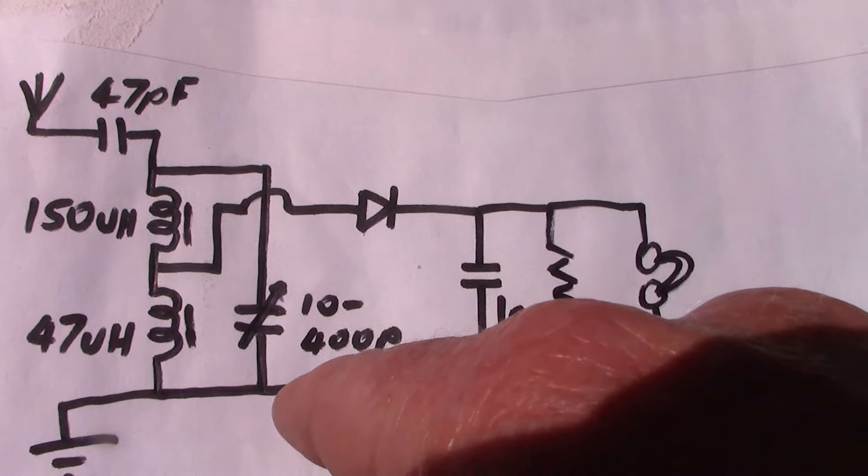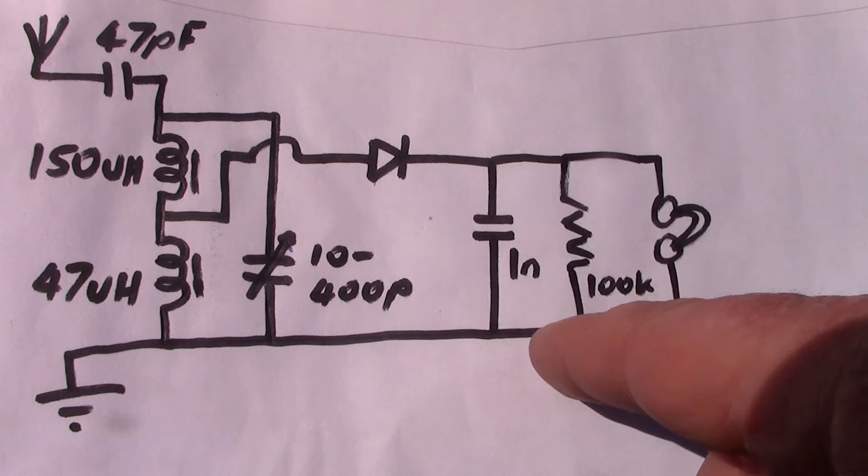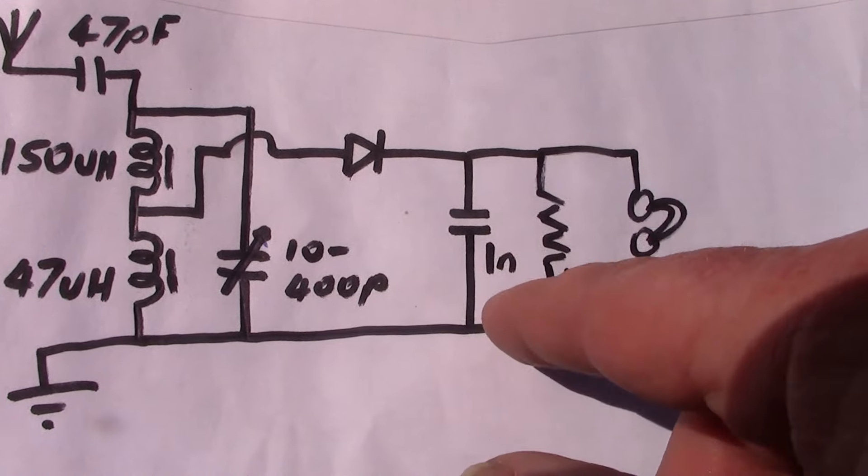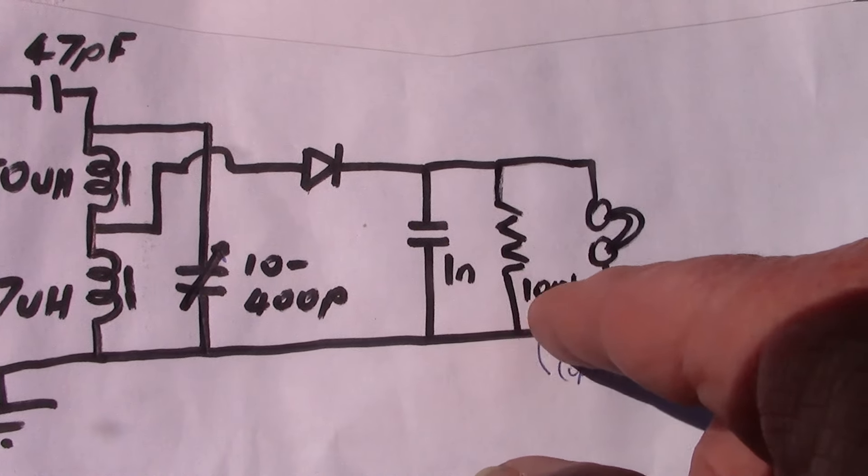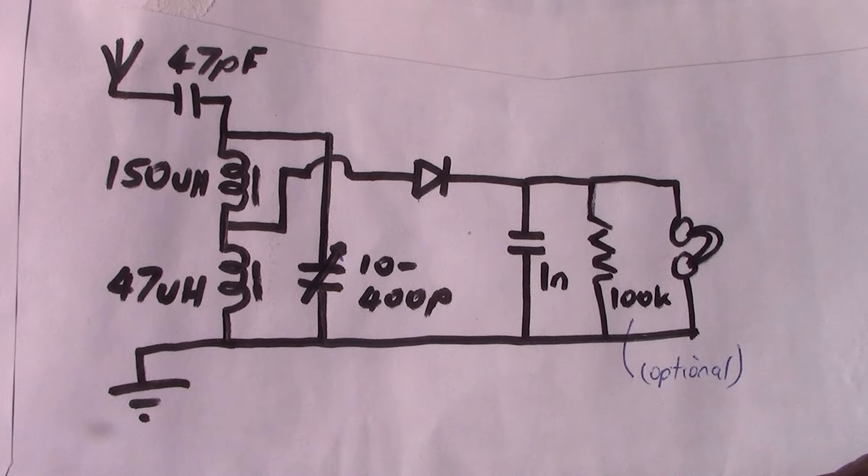There's the variable capacitor. You've got an earth there that will really improve reception, so don't omit the earth. Although if you're in a strong signal area, you will hear stations without the earth. There's the 1 nanofarad and parallel resistor, as I described, and the headphones. So, that's the circuit of the crystal set.